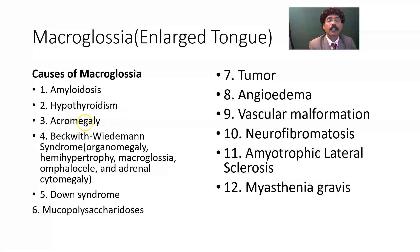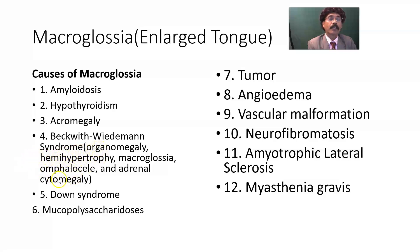Acromegaly, which happens due to a tumor of the anterior pituitary gland. Beckwith-Wiedemann syndrome is a clinical syndrome associated with organomegaly, like enlargement of the liver, spleen, as well as tongue, hemihypertrophy, omphalocele, and adrenal cytomegaly — the adrenal cortical cells will be very large.